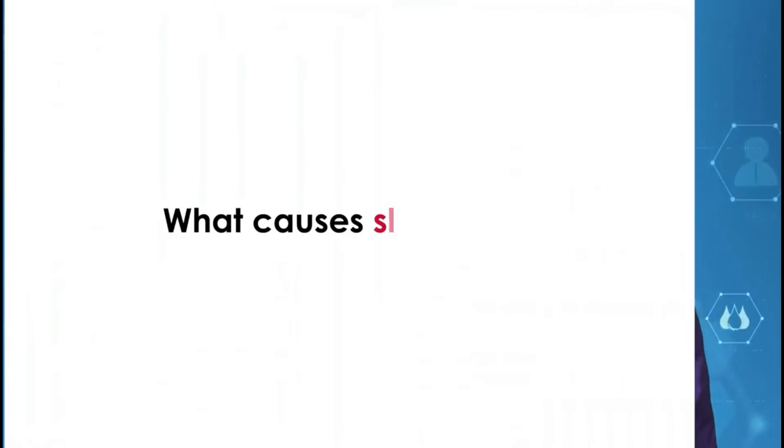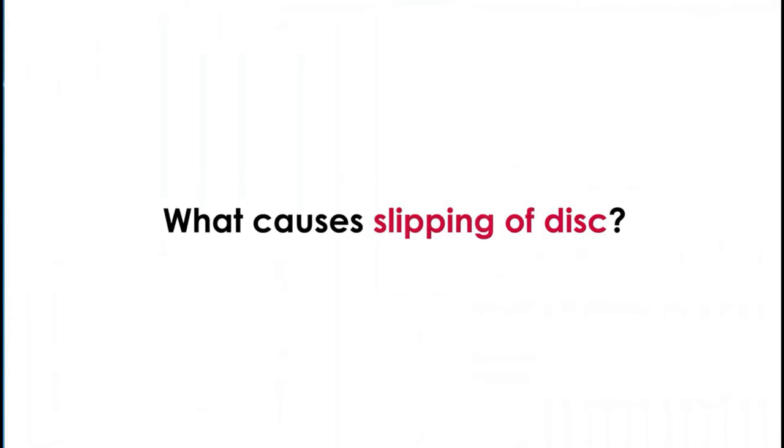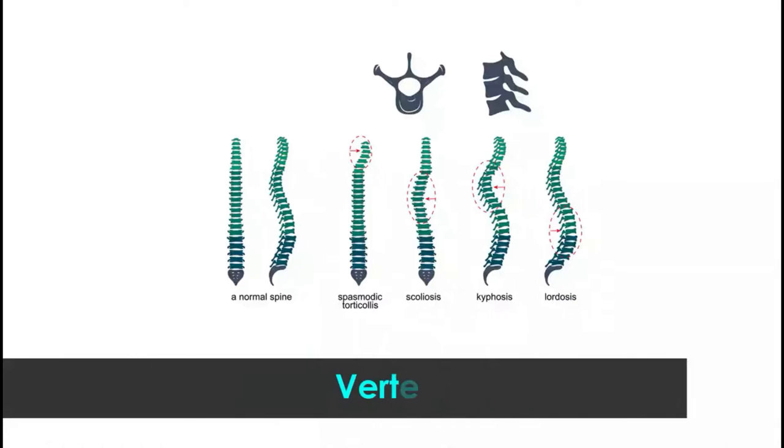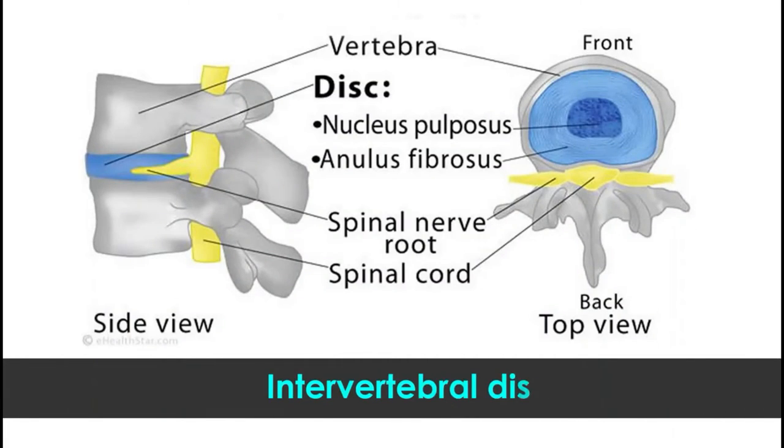What causes slipping of the disc? Our back vertebral column is made up of a number of small bones which are known as vertebrae. In between each two bones, there is a soft cushion-like material which is known as an intervertebral disc.